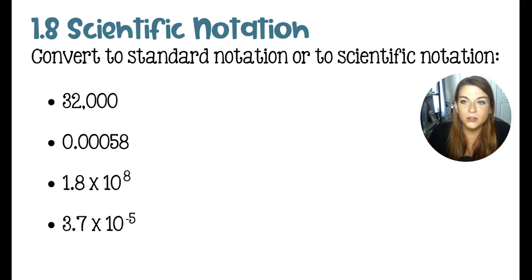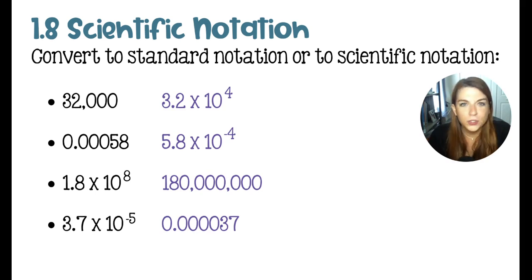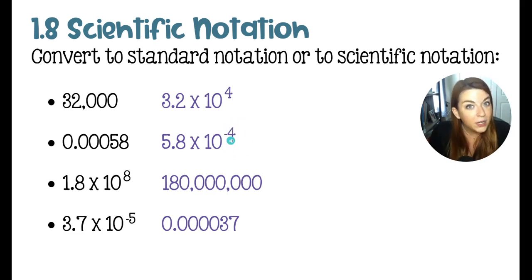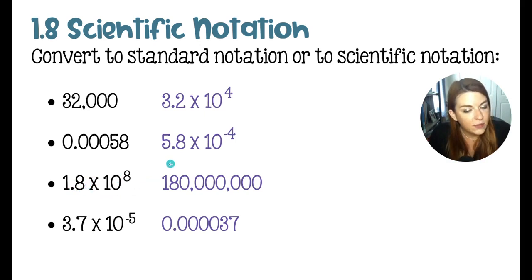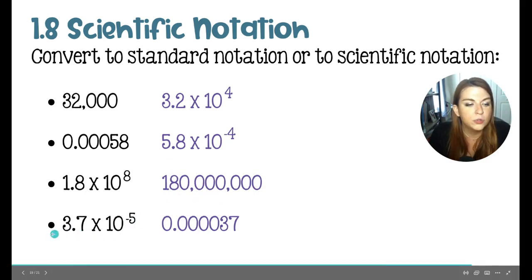Next, convert standard notation into scientific notation and vice versa. 32,000 = 3.2 × 10⁴. 0.00058 = 5.8 × 10⁻⁴ — the negative exponent does not indicate a negative number; it indicates a number smaller than 1 but greater than 0. 1.8 × 10⁸ means you move the decimal eight places to the right, giving you 180,000,000. And 3.7 × 10⁻⁵ means moving the decimal to the left, giving 0.000037.